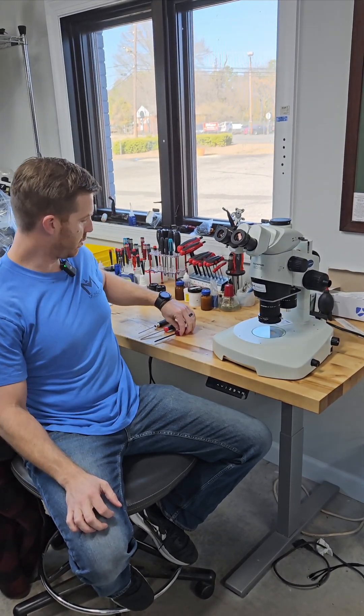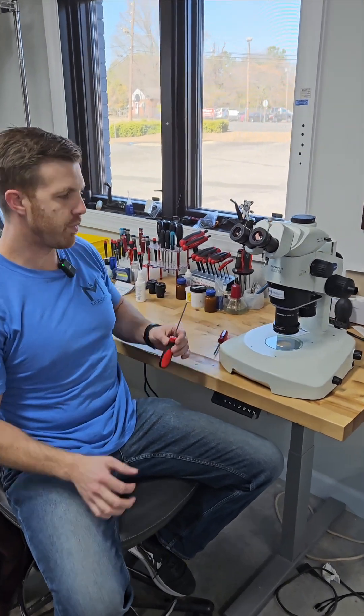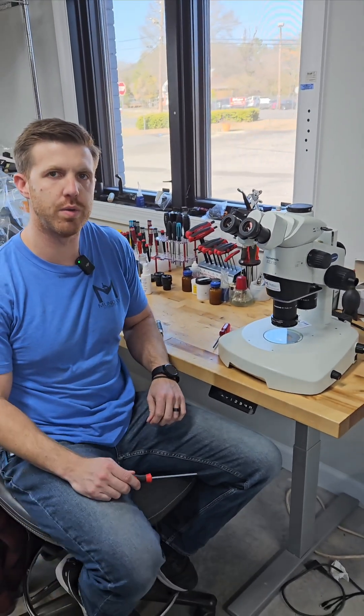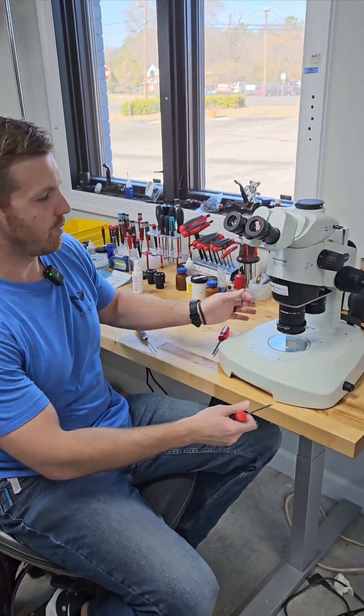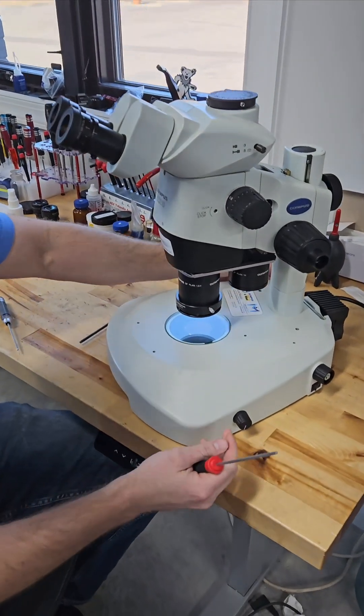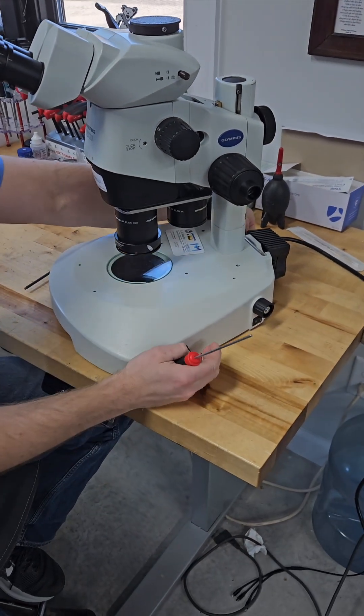I've got my tools here that we need and we're going to start off with a three millimeter Allen wrench. We'll include a few of these tools in the box for the customer in case they don't have them. First things first, the microscope is being tested, so we're going to make sure it's off and unplugged.